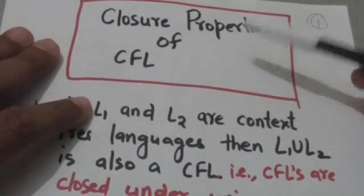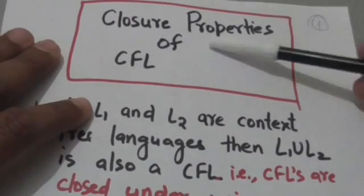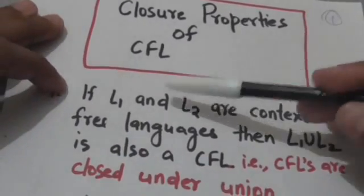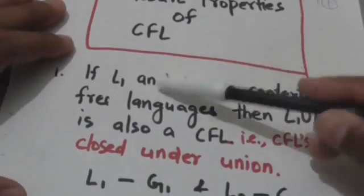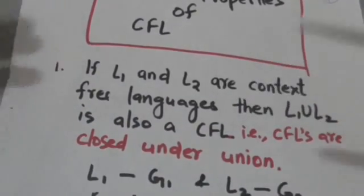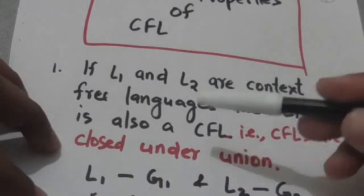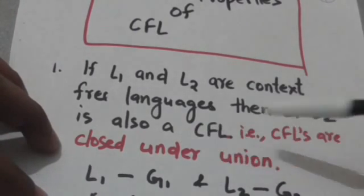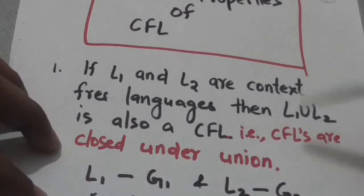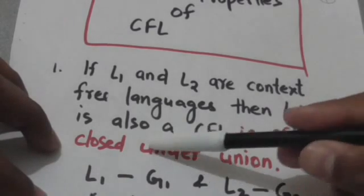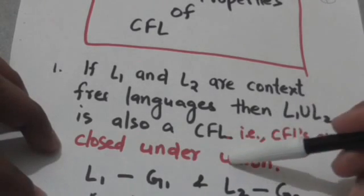Welcome back. In this tutorial we will study about the closure properties of context-free languages. The first property is: if L1 and L2 are two context-free languages, then their union — L1 union L2 — is also a context-free language. This means context-free languages are closed under union.